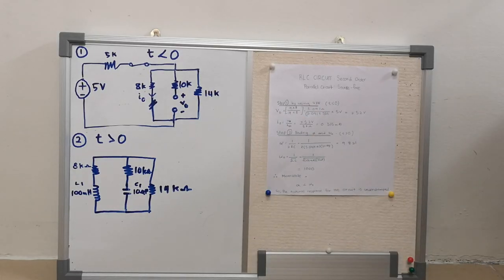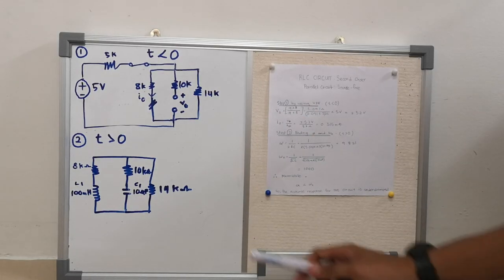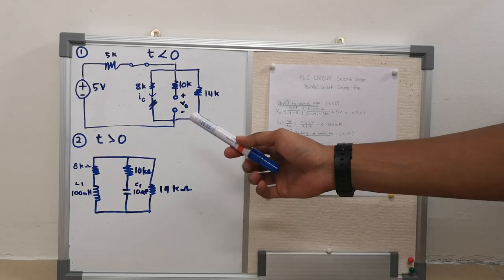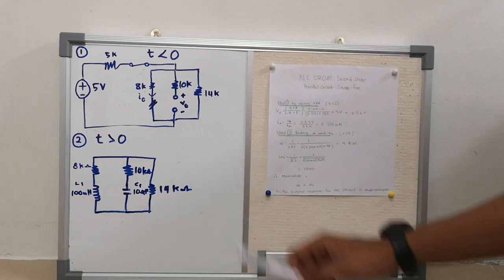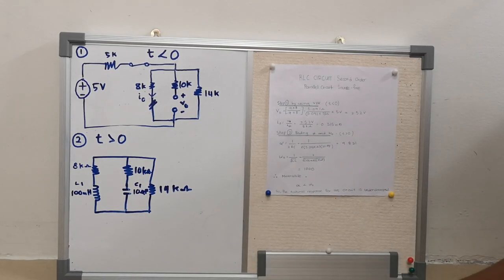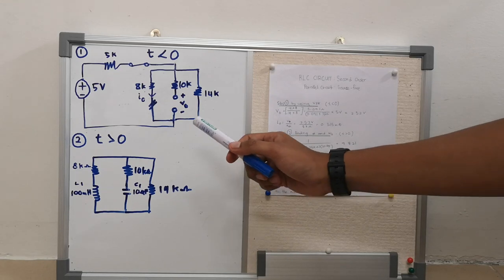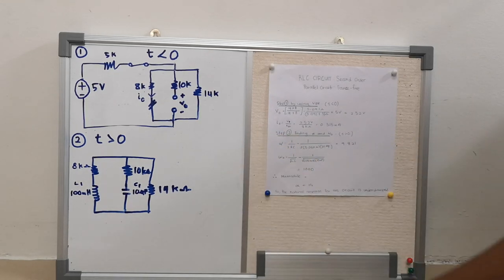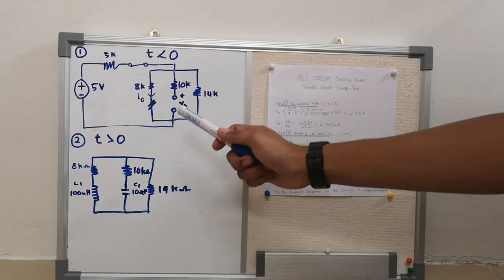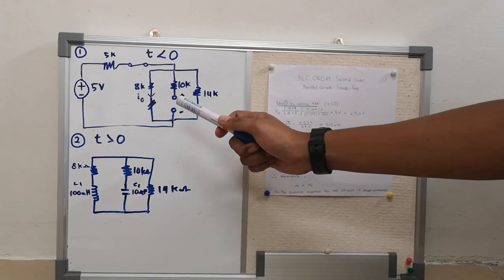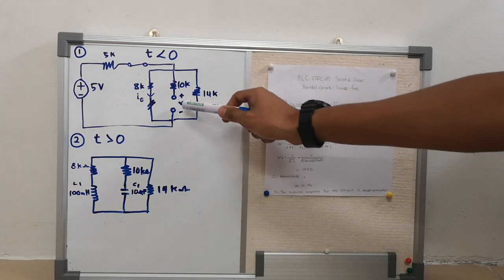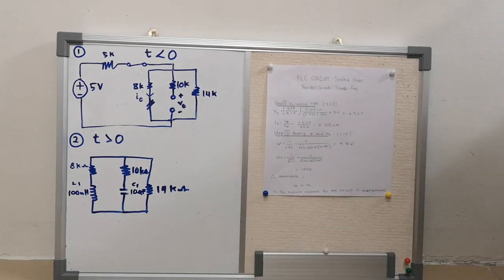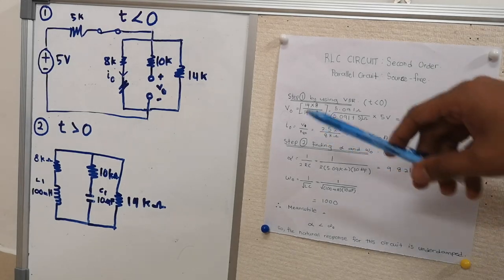To identify the circuit and find V node and I node, the circuit must be analyzed at T less than zero. When T is less than zero, we must use steady-state conditions. In DC supply, inductance will be a short circuit and the capacitor will be an open circuit.